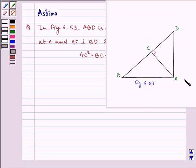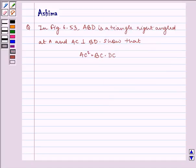Given to us is a figure where ABD is a right angle triangle at A and AC is perpendicular to BD. Now before writing the solution,